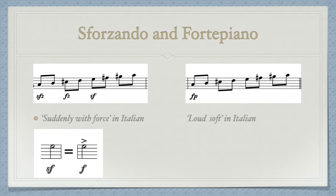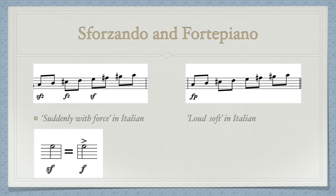Both sforzando and fortepiano are dynamic markings. Sforzando means suddenly with force in Italian. It is a strong and sudden accent on a note or a chord. You will see the abbreviation sfz, fz, or sf on the note. You play with an accent in the beginning, and then you still play it loud. Fortepiano literally means loud-soft in Italian. It is a sudden dynamic change. It starts with an accented attack, followed immediately by a soft sound within the same note. Fp is the notation for fortepiano.